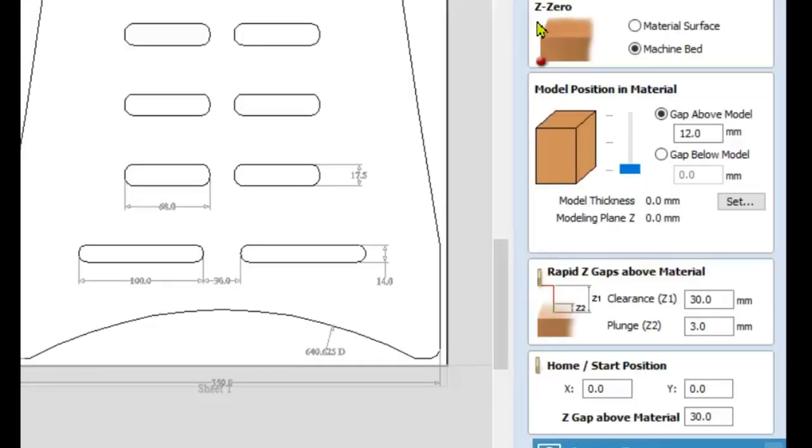You can go through the initial settings that you did in the beginning of the project. Z zero is going to be set to the machine bed. The rapid Z gap above material, that is the important value right here. So the clearance for Z is going to be 30 millimeter, that's the measurement of my clamp. There's also a plunge dimension you're going to set that to three millimeter, that's where the plunge speed starts. The home position I leave at zero and the gap above the material 30 millimeter again so that we don't run into our clamp.